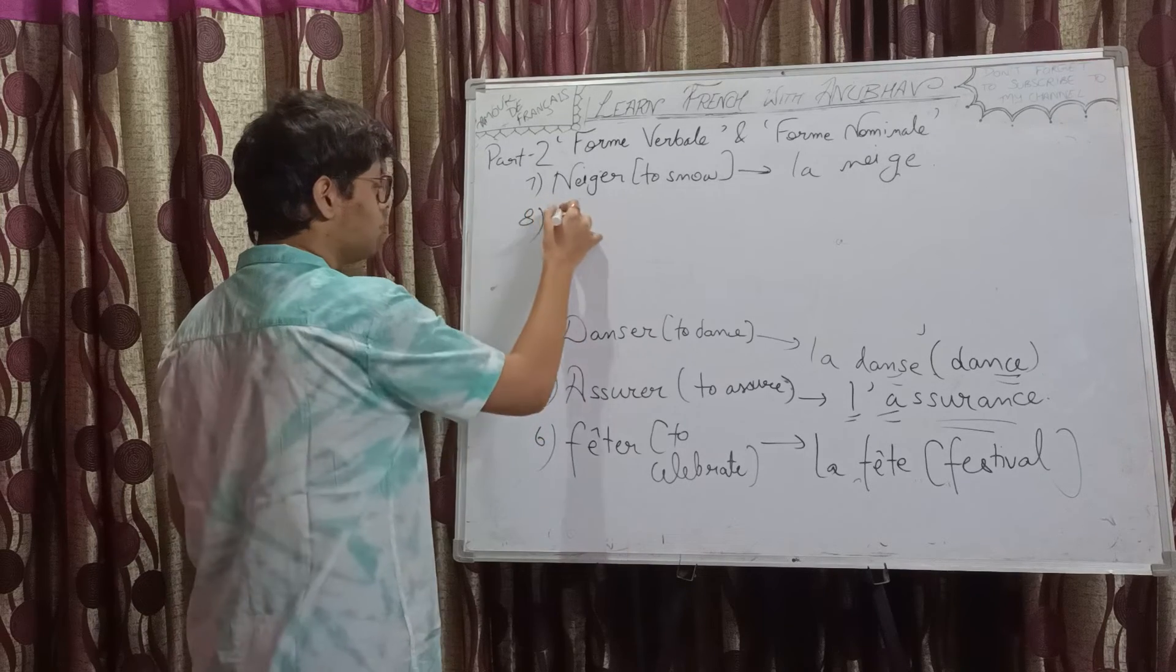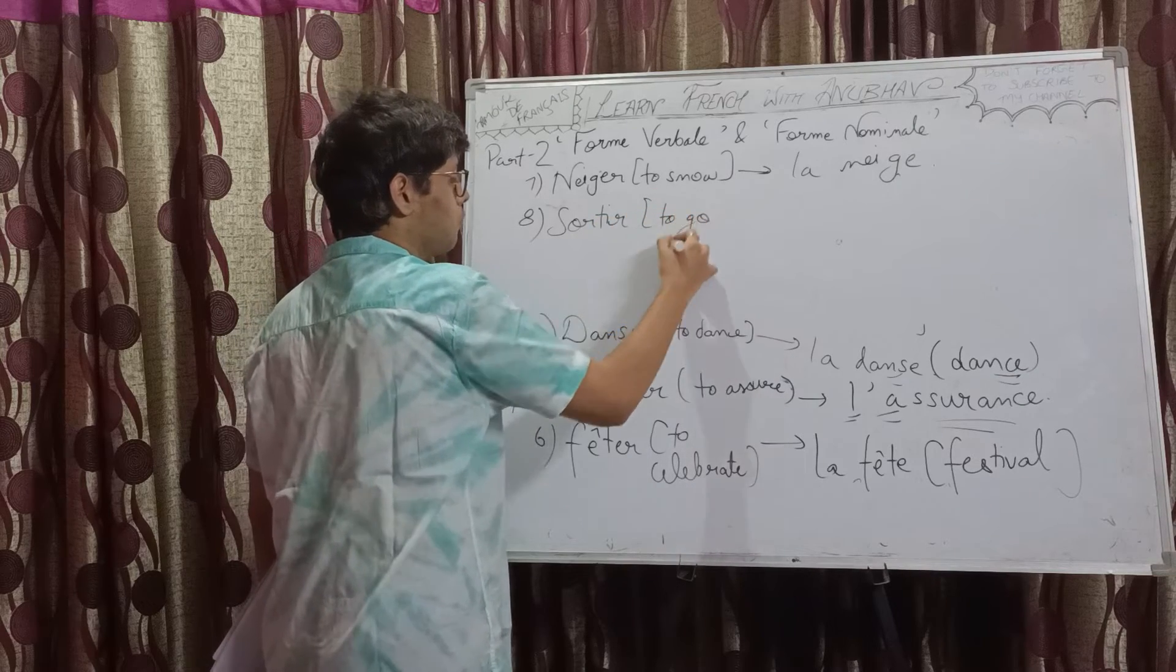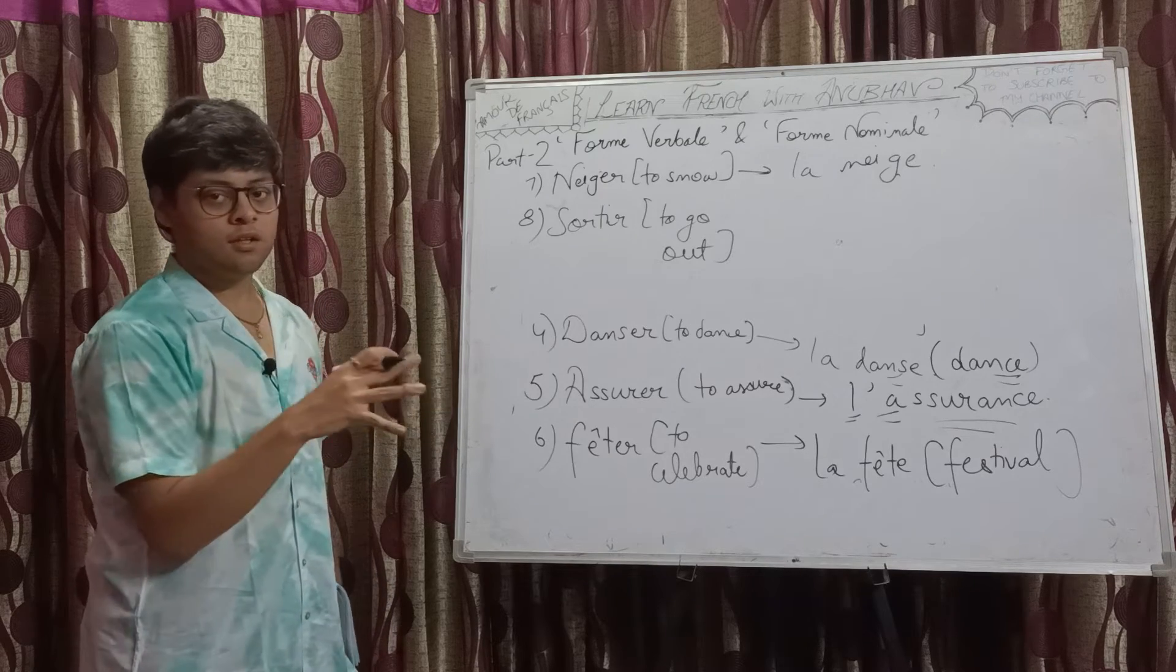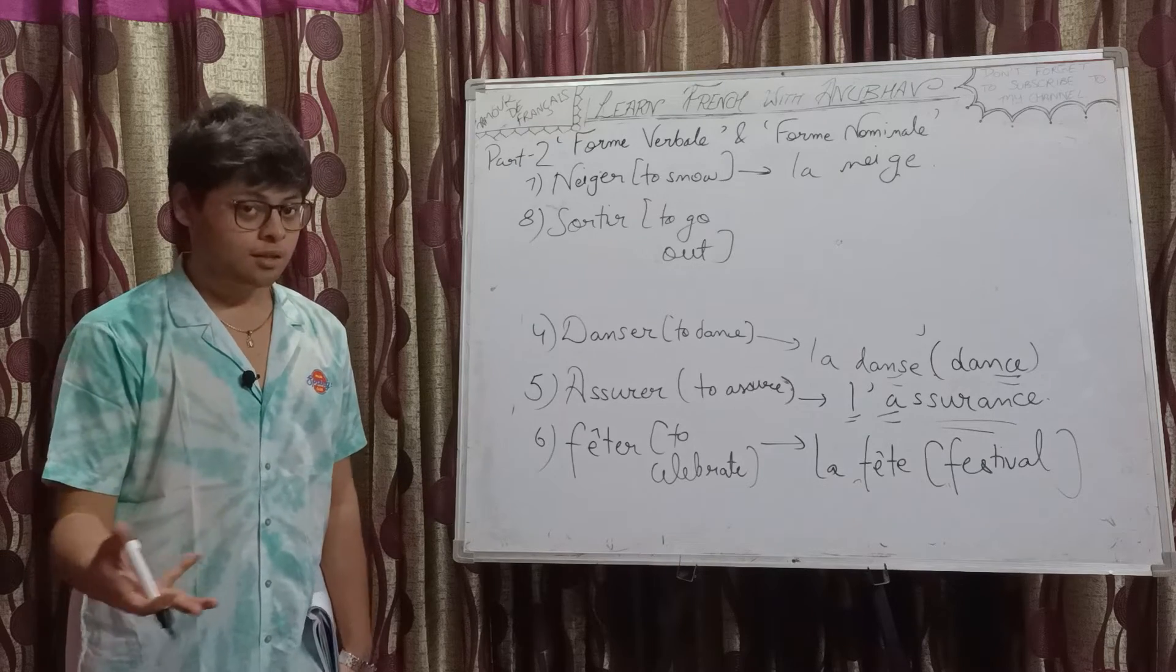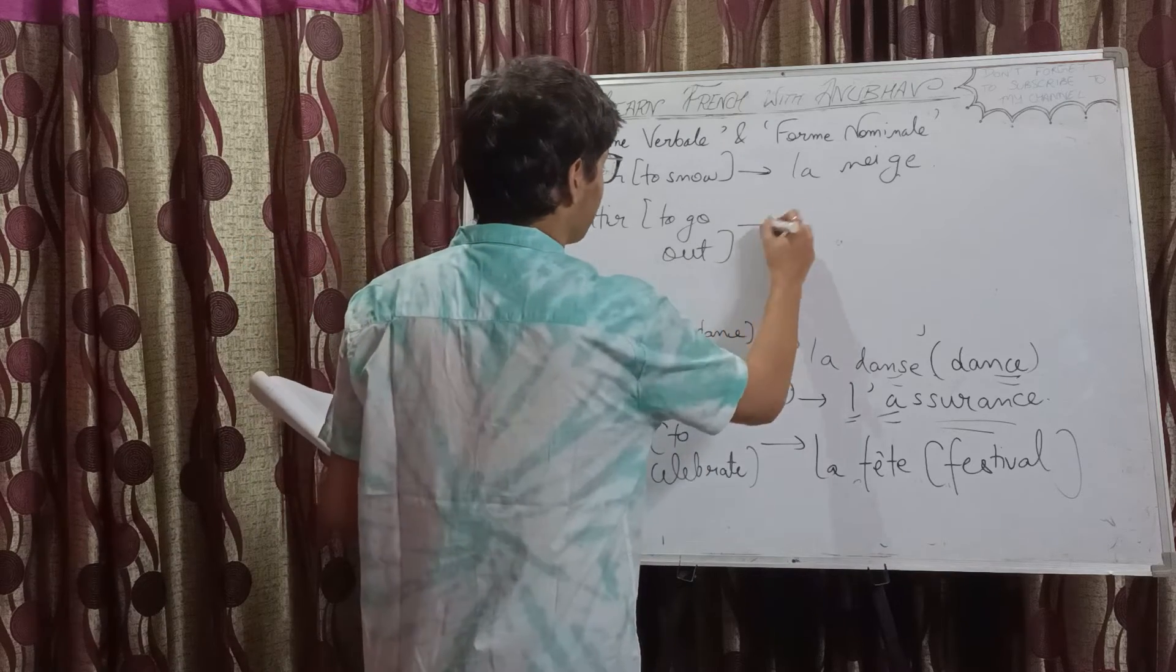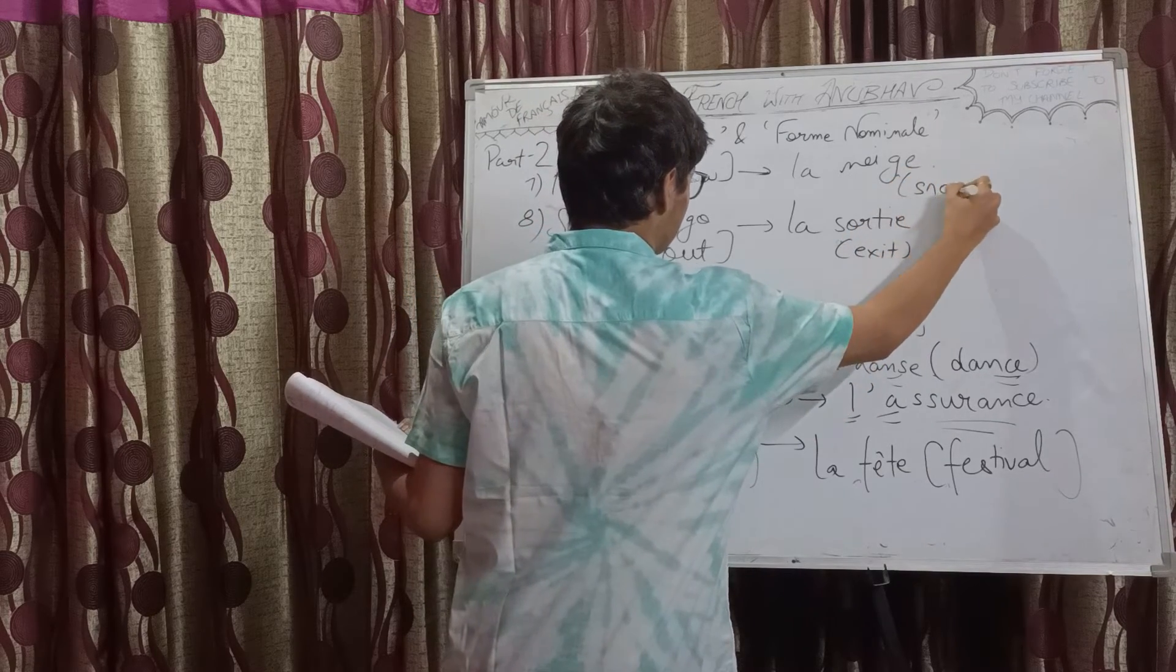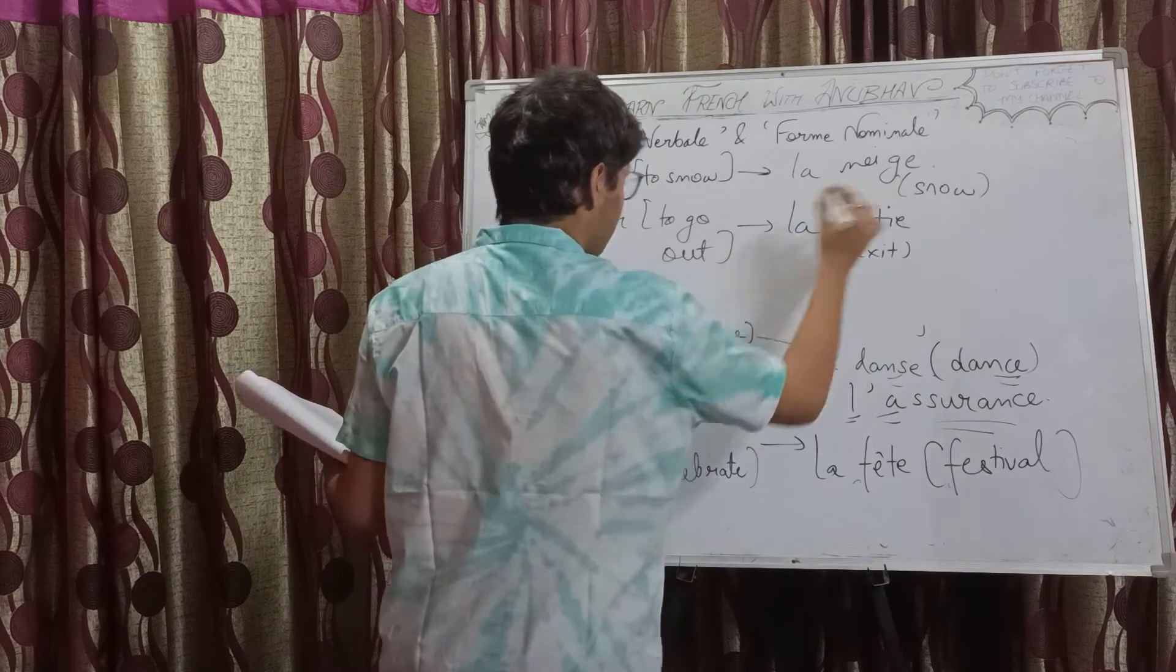Eighth one, we have sortir. Sortir means to go out. What could be the noun form? Maybe from where we can go out, and that's exit. It is la sortie. This means exit.